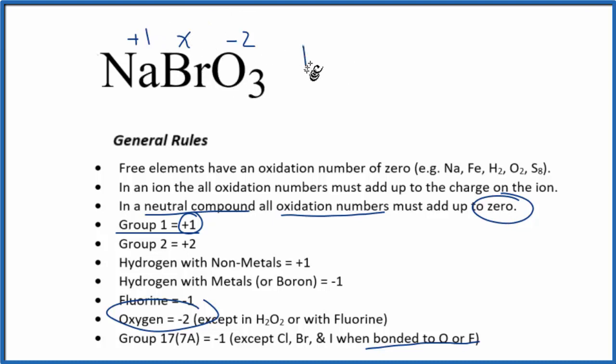So we'd have one plus, we don't know the bromine, that's X, plus we have three oxygens, so three times minus two, that's a negative six, that equals the zero here. So each one of the oxygens has a minus two oxidation state.